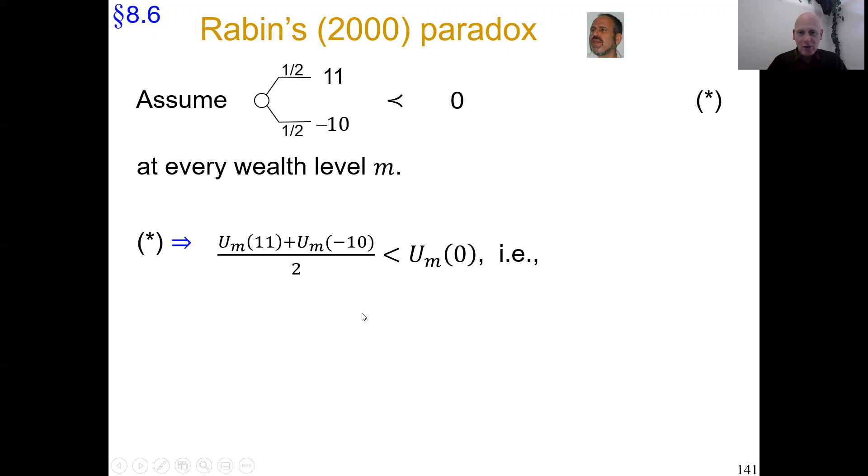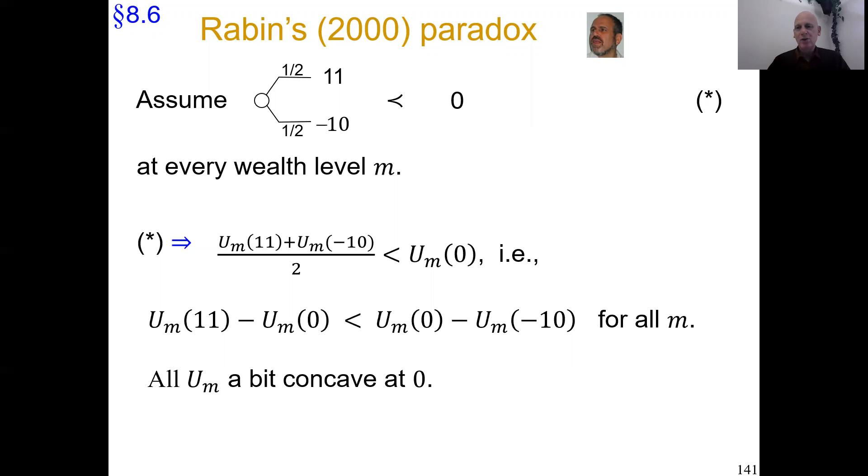We see from the inequality that in utility units, zero is above the midpoint of these two. So zero is closer, in utility units, to 11 than to minus 10. That's how I rewrote the inequality here. Now, this is really easy to accommodate. The only thing we have to do is take that utility function with subscript m and let it be a bit concave in a neighborhood of zero. For instance, a bit of loss aversion already does it. We can take one utility function that does it, independent of the subscript m, and still we can easily accommodate it.